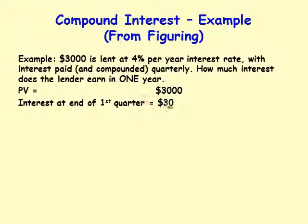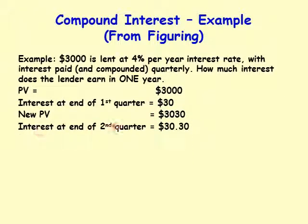One percent of three thousand dollars is thirty dollars — move the decimal place to the left by two. At the end of the first quarter, we add the thirty dollars interest to the principal, giving a new principal of three thousand and thirty dollars. For the second quarter, one percent of three thousand and thirty dollars gives thirty dollars and thirty cents, so the new principal becomes three thousand and sixty dollars and thirty cents.